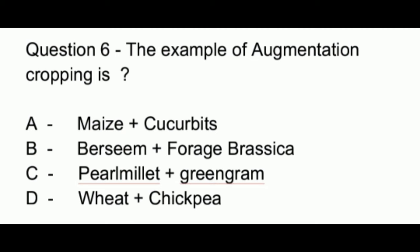Question number 6. The example of augmentation cropping is: Option A: maize and cucurbits. Option B: bursim and forage brassica. Option C: pearl millet and green gram. Option D: wheat and chickpea. The correct answer is option B, which is bursim and forage brassica.